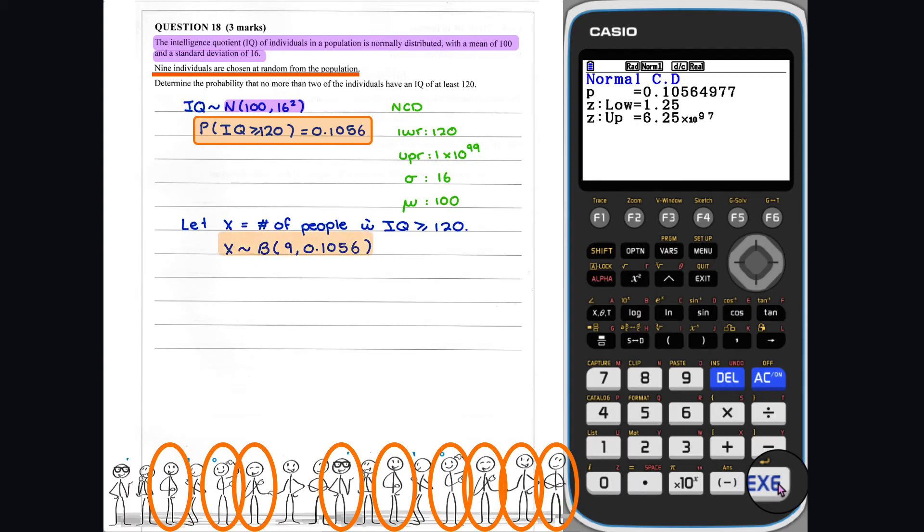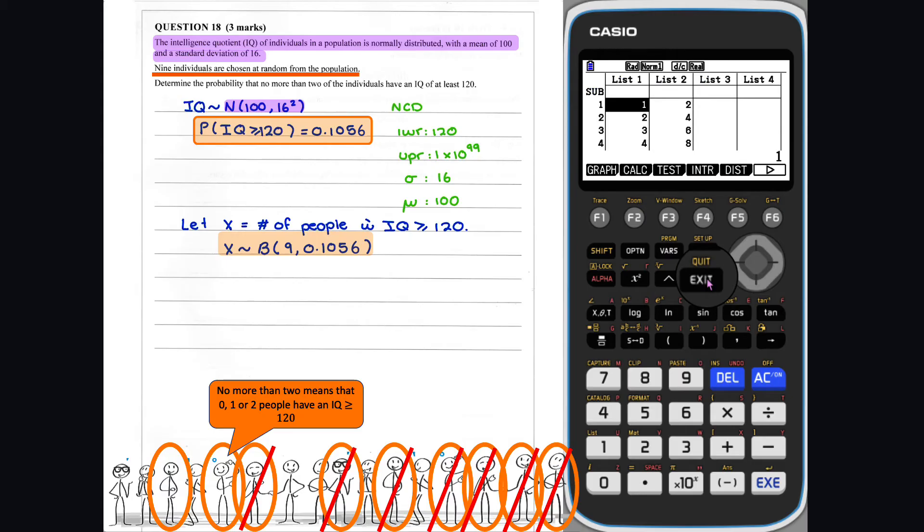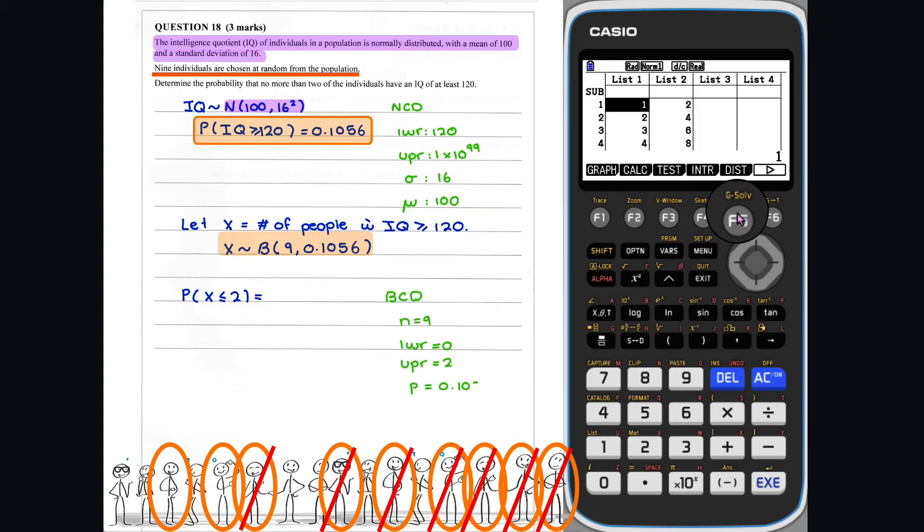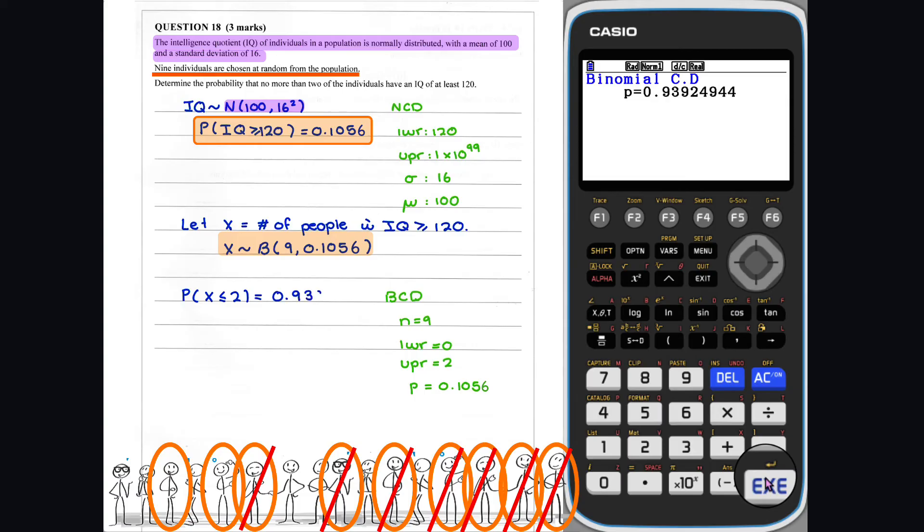We want to find the probability that no more than two of the individuals have an IQ of at least 120. We need to find the probability that X is less than or equal to 2. We can work out this probability using the BCD mode. Thus, the probability that no more than two individuals have an IQ of at least 120 is 0.9392.